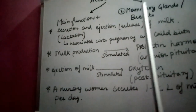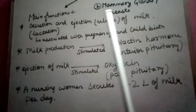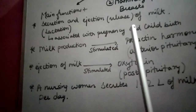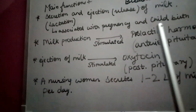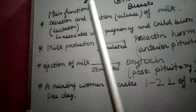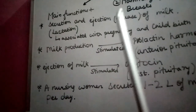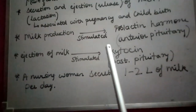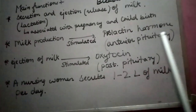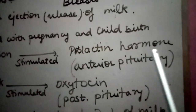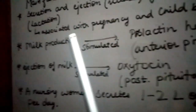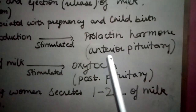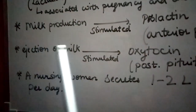The functions of mammary glands include secretion and ejection of milk, known as lactation. Lactation is associated with pregnancy and childbirth — after the birth of the baby, the mother begins producing and ejecting milk. Milk production in the mammary glands is stimulated by the hormone prolactin, which is secreted by the anterior pituitary.